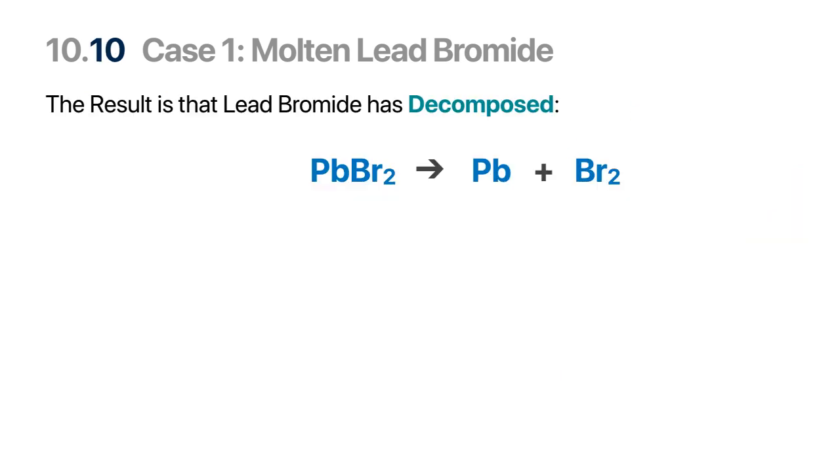You started off with lead bromide in liquid form and now you're left with lead the metal and bromine gas is given off. So the entire process, what happened was this ionic compound decomposed to its elements. It's made of lead and bromine and you successfully managed to extract lead, separate lead and bromine from it. So it decomposed to its elements.